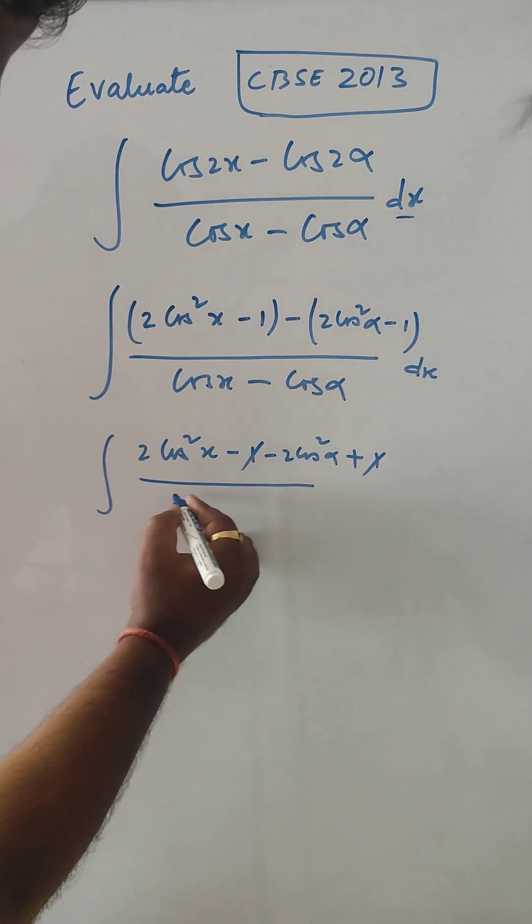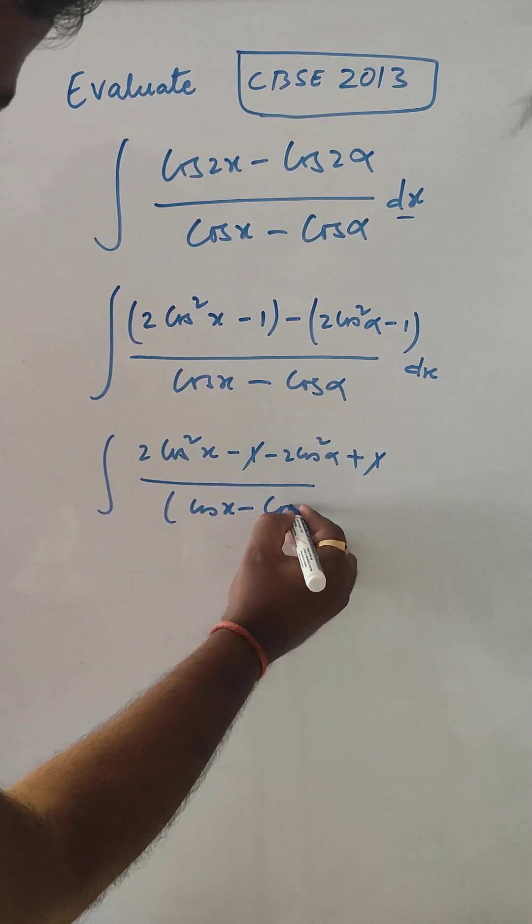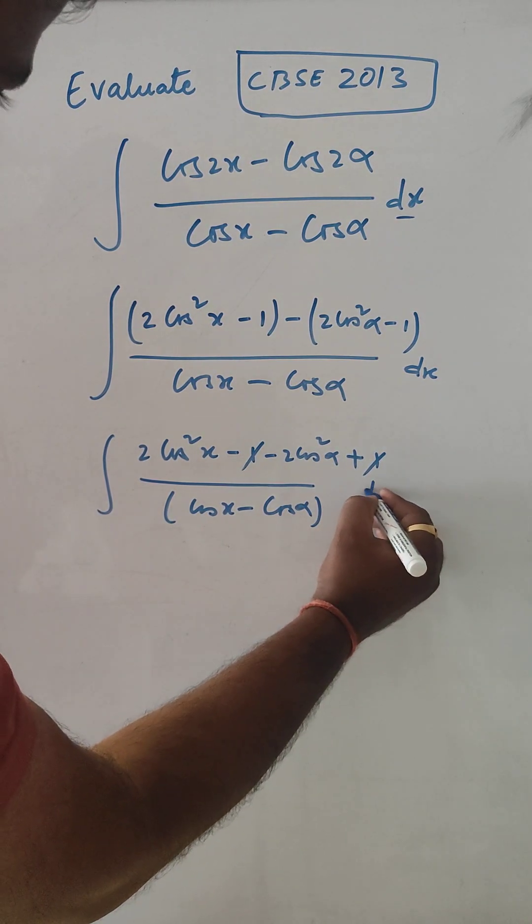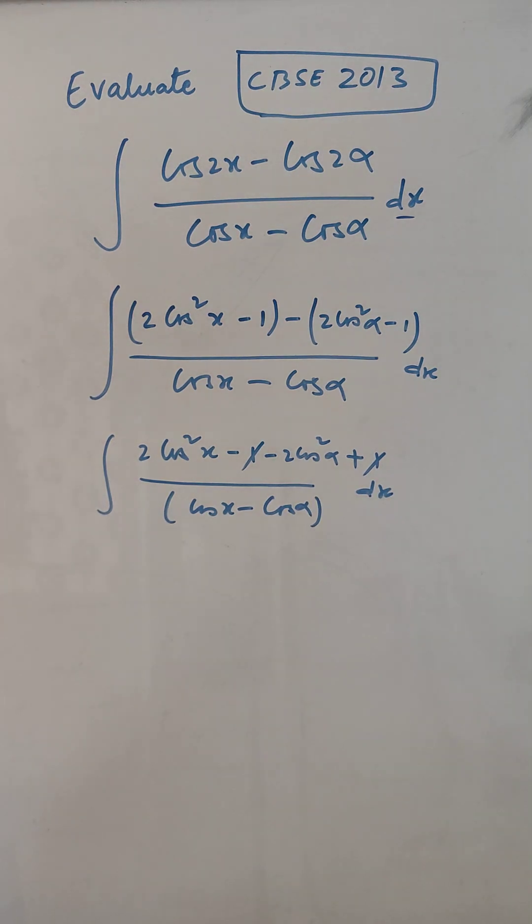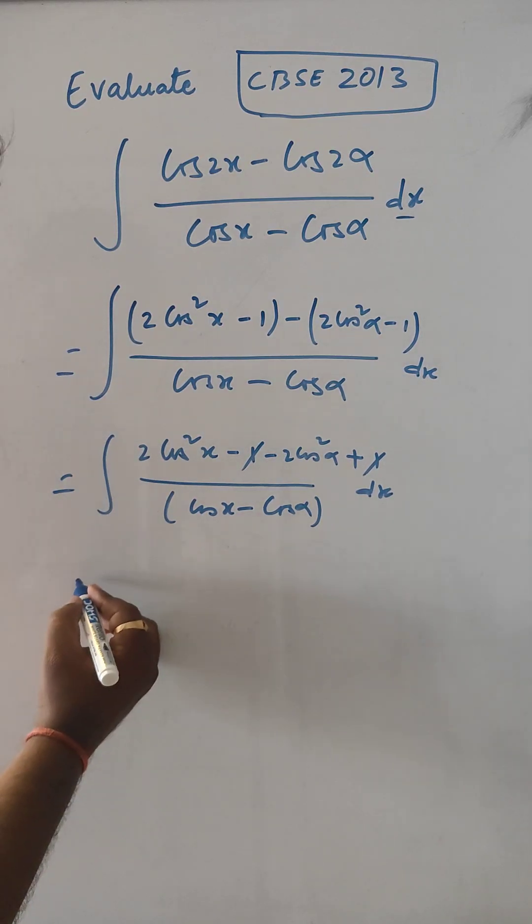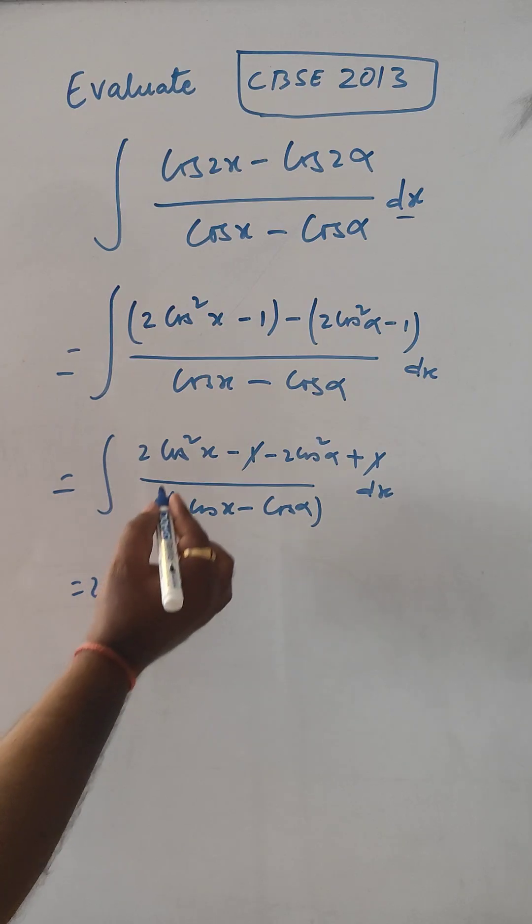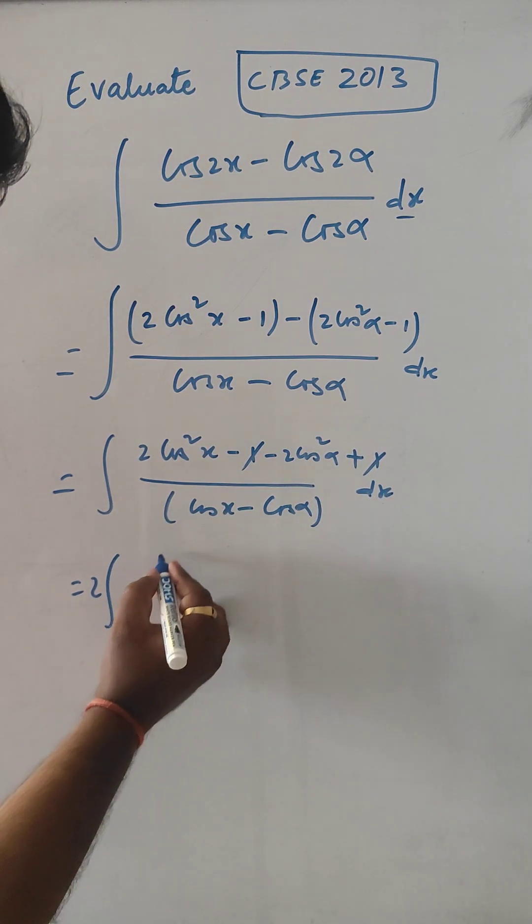The denominator is cos x - cos α, dx. Now for the next term, we can take 2 common from the numerator.